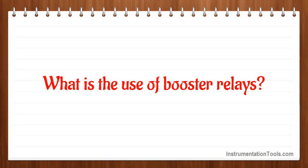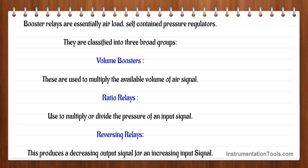What is the use of booster relays? Booster relays are essentially air-loaded, self-contained pressure regulators. They are classified into three broad groups: volume boosters, which are used to multiply the available volume of air signal; ratio relays, used to multiply or divide the pressure of an input signal; and reversing relays, which produce a decreasing output signal for an increasing input signal.